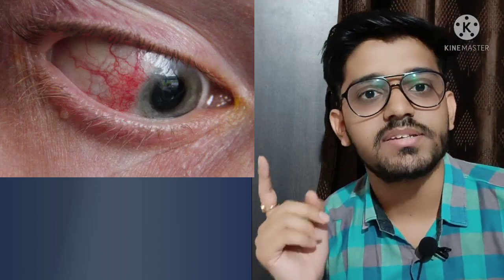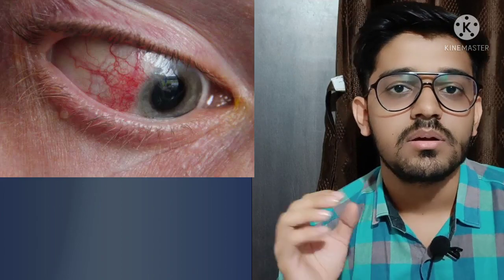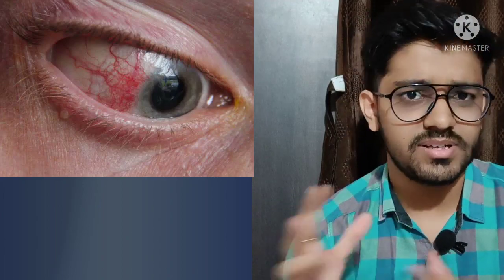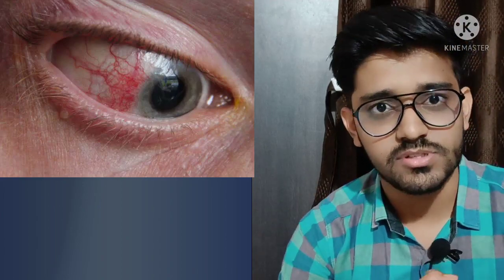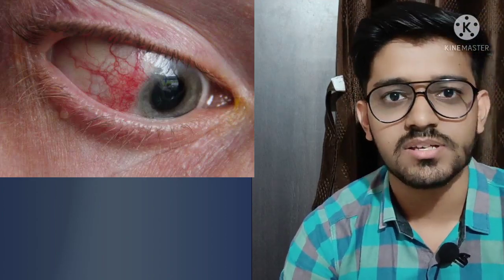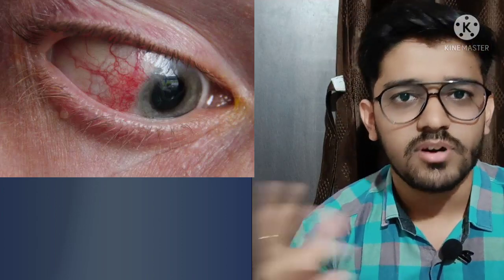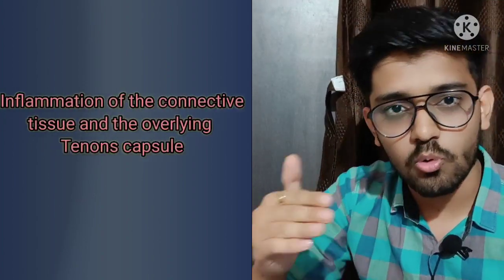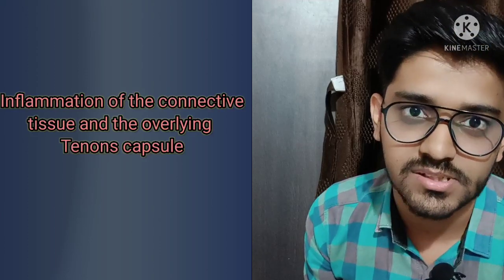Conjunctivitis is associated with discharge — allergic conjunctivitis has watery mucoid discharge, bacterial has purulent discharge, vernal keratoconjunctivitis has a ropey stringy discharge, and phlyctenular conjunctivitis has a phlycten. Episcleritis, by contrast, is the inflammation of the connective tissue over the sclera, and this first image represents episcleritis.